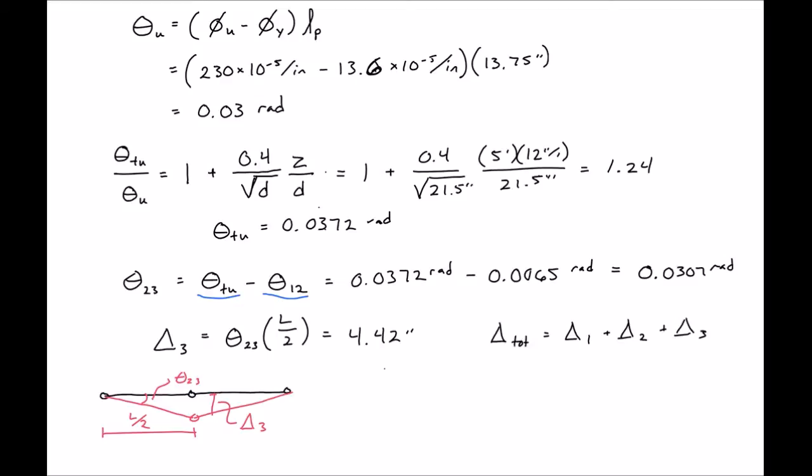Our total deflection then is just equal to our theta one plus theta two which we found before as elastic and deflection to form a mechanism plus our theta three which is our plastic deformation. So we'll get our total deformation in this case to be 5.36 inches.